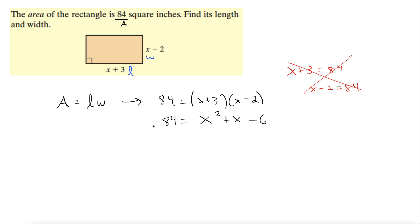Now again, we need to get a 0 on one side. So let's subtract the 84 from both sides. Now we have 0 equals x squared plus x minus 90.